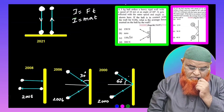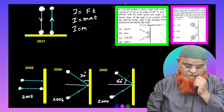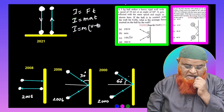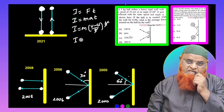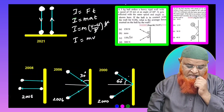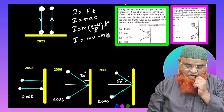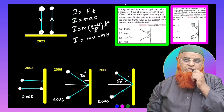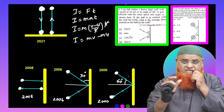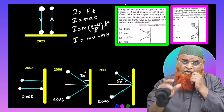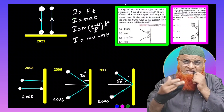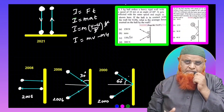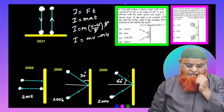Impulse can be written as mass into acceleration into time, which is M into (V minus U) / T, into T. The T's cancel, and finally impulse equals change in momentum — MV minus MU. So impulse is the product of force and time, and also defined as the change in momentum.